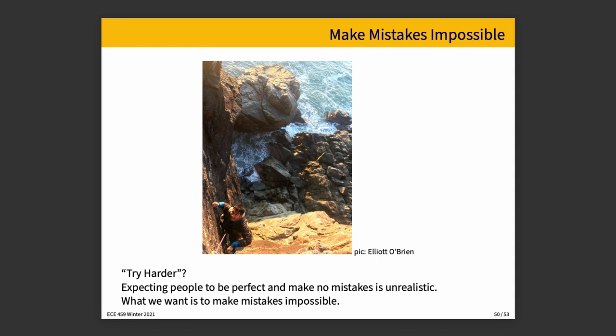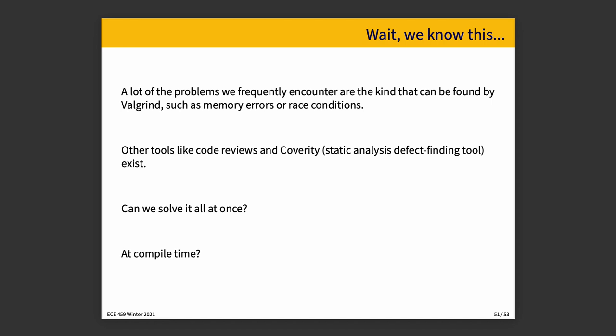What we need instead is to make it so that mistakes are impossible, or at least difficult. We can also think about mitigating the effects of mistakes — another subject we'll come to. A lot of the tools we use are intended to find errors: Valgrind finds memory errors and race conditions, which we'll talk about later in the course. Other tools like code reviews involve humans in the process, and Coverity is a static analysis defect-finding tool. You can even think of a linter as a way of finding these errors.